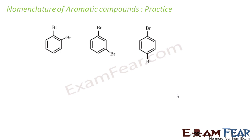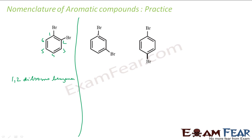Here the main functional group is benzene, and bromine is just a prefix. Let me number the ring to get the least values. Trying 1 and 3 for the two bromine positions gives a sum of 4, while trying 1 and 5 gives a sum of 6. So we take 1 and 3. The name is 1,3-dibromobenzene.